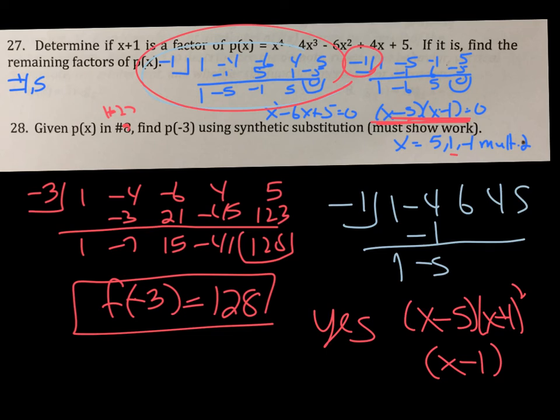Problem 28 says find p of 3 using synthetic division. So all you do is you put negative 3 in your box. Whatever your remainder is, that's what p of negative 3 would be. If you were to plug negative 3 in for all those x's, that's what you would get, 128.